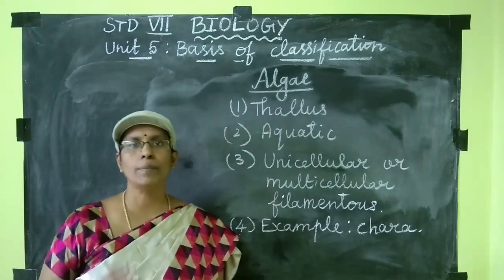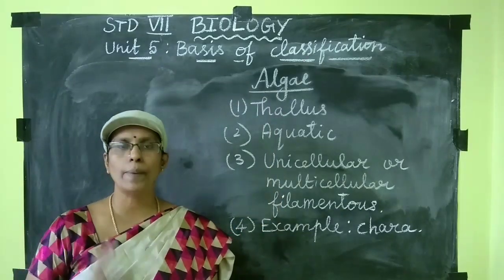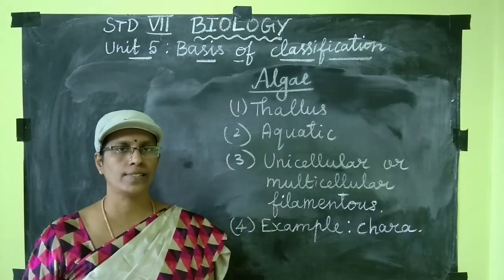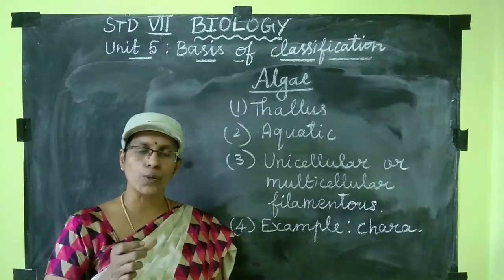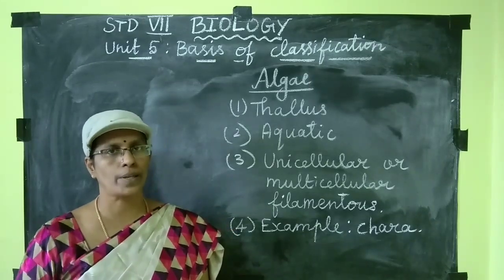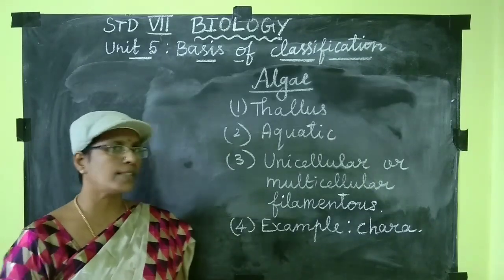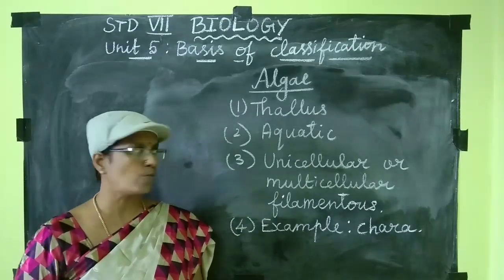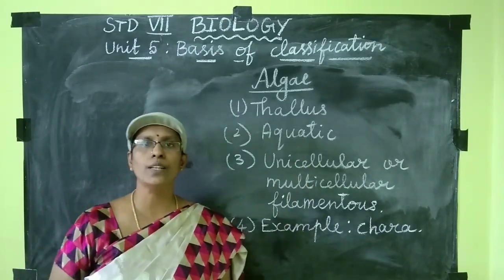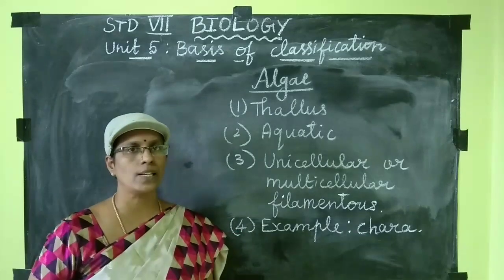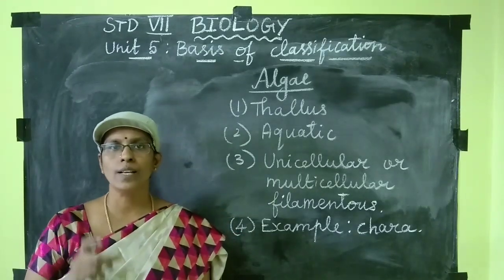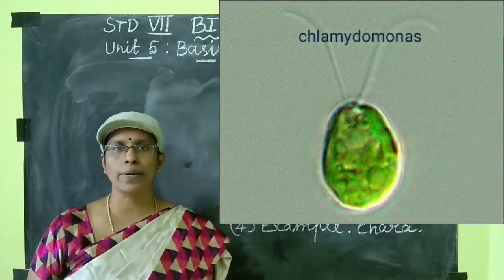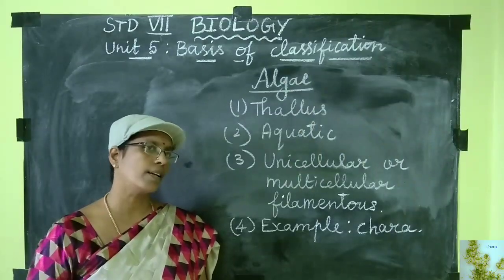Now let's see the first group of plants: algae. In algae, the plant body is a thallus — meaning the plant body is not well differentiated into true root, stem, and leaves. They are predominantly aquatic, meaning they live in water. They can be unicellular or multicellular filamentous. Unicellular example: Chlamydomonas. Multicellular example: Chara.